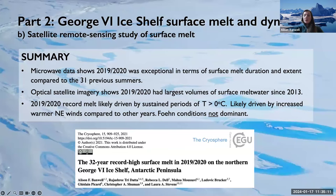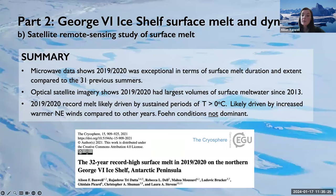Quick summary: passive and active microwave data both show surface melt duration and extent on George VI in 2019-2020 were exceptional compared to the 31 previous summers. Optical satellite imagery confirms this melt season had the largest volumes of water since 2013. We suggest this record melt event was driven by sustained warm air temperatures of up to 90 consecutive hours. A paper about this was published in The Cryosphere in 2021.